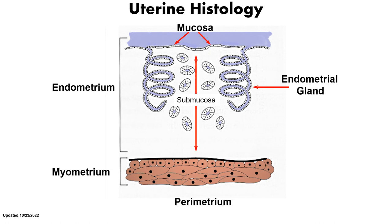The perimetrium is the outermost layer and is continuous with the broad ligament. The myometrium has a thick inner circular layer and a thinner outer longitudinal layer. The endometrium is the innermost layer of the uterus. It has many simple tubular glands whose secretions create a special environment in the uterus conducive for the development of the embryo.